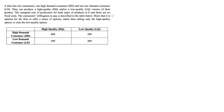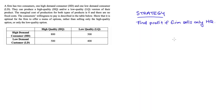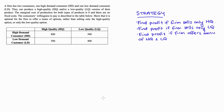The consumer's willingness to pay is described in the table below, and we're asked to show that it's optimal for the firm to offer a menu of options rather than selling only a high quality option or only a low quality option. My strategy is to figure out profit under each scenario: HQ only, LQ only, and then offering a menu of both.